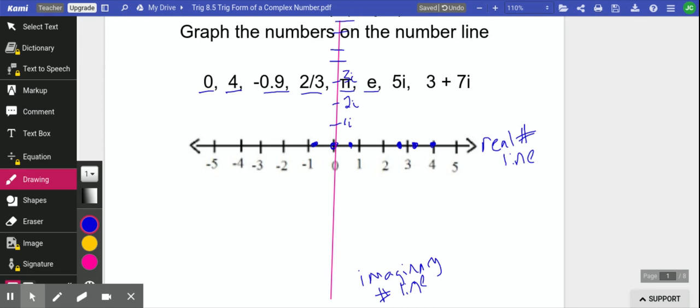If we want to graph 5i, we would just go up to 5i and put a dot there. The combination of the real number line and the imaginary number line enables us to graph things like 3 plus 7i. So 3 is your real number on the real number line, 7i is the imaginary number. All of this together, we call the complex coordinate plane.